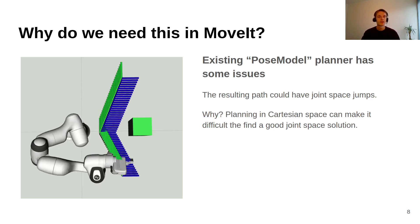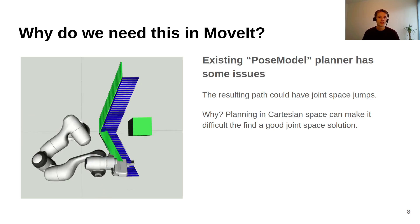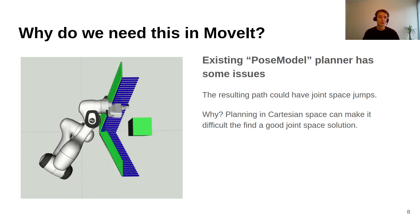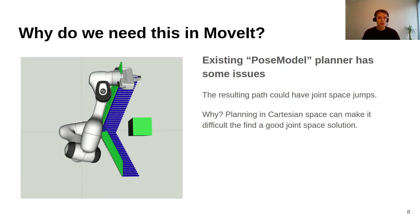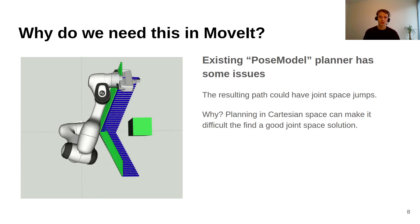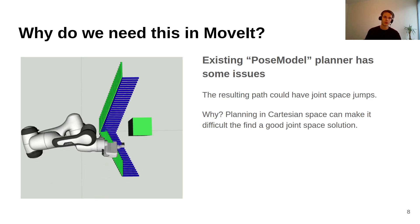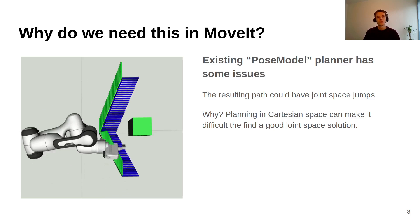Why do we need this in MoveIt? MoveIt already has a planner for Cartesian path constraints, as presented by Mark earlier. One of them was a pose model planner, but this planner has some issues as there are these joint space jumps as you can see in the animation. Sometimes a robot flips an axis and this is not executable on a real robot.